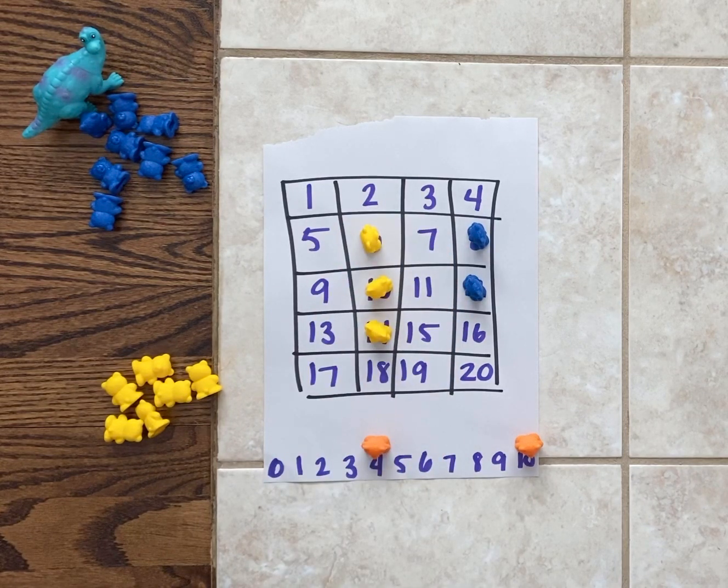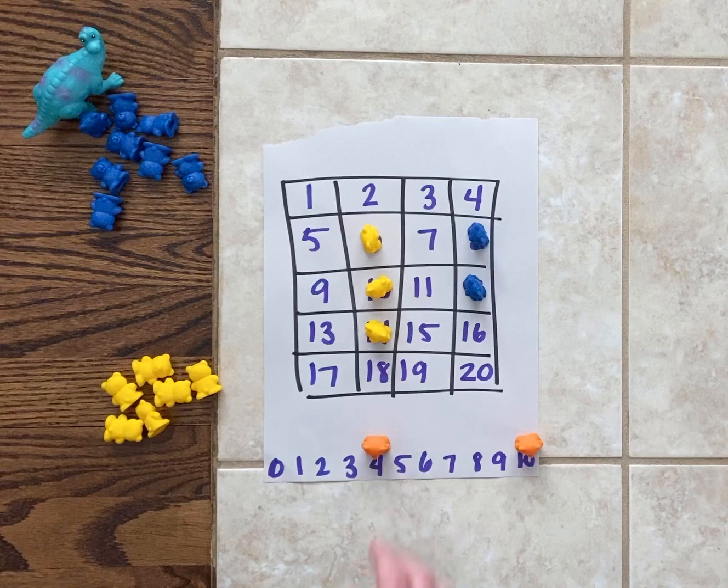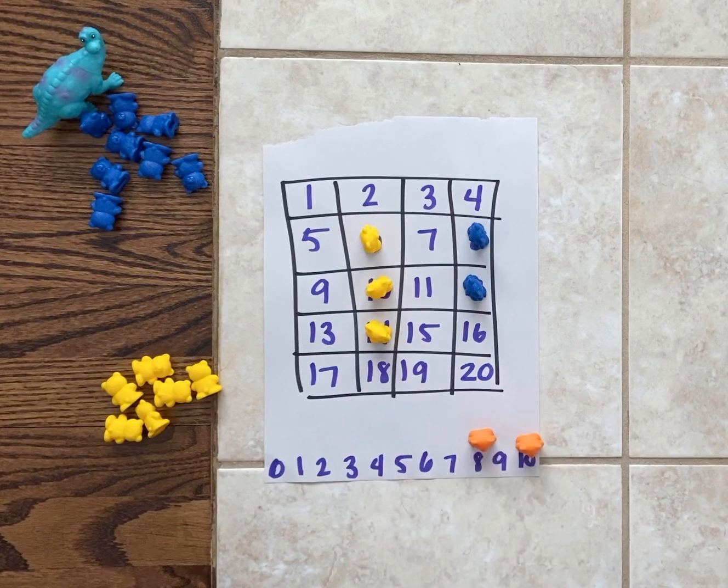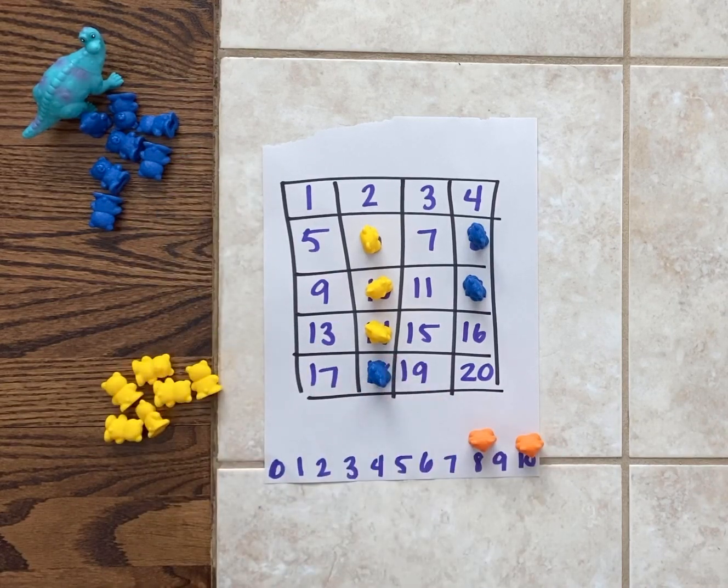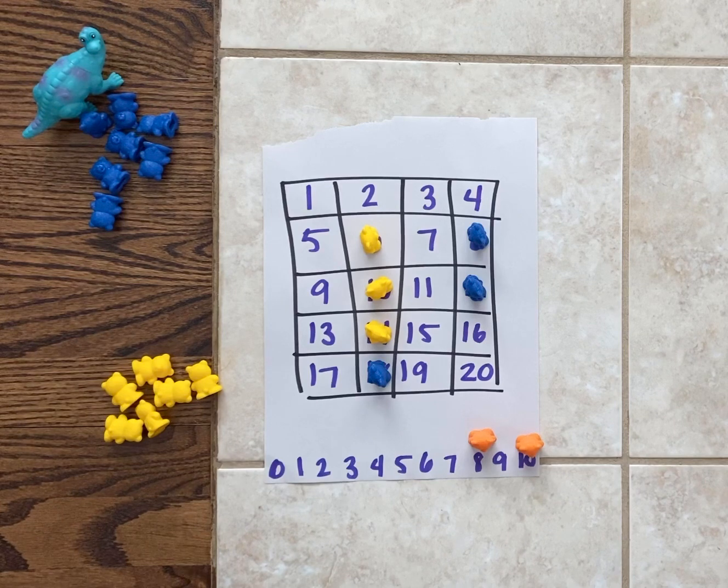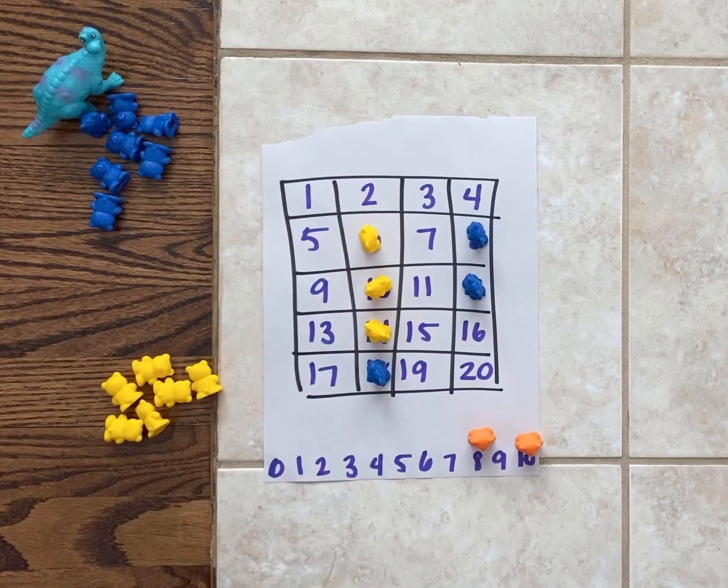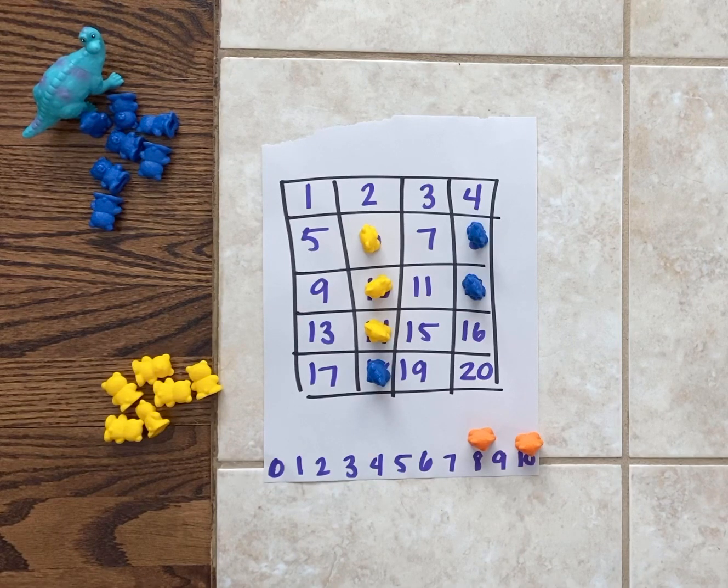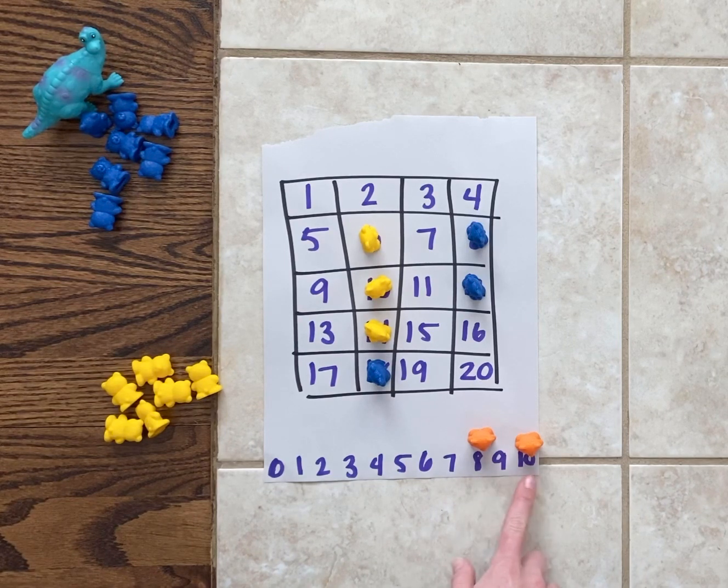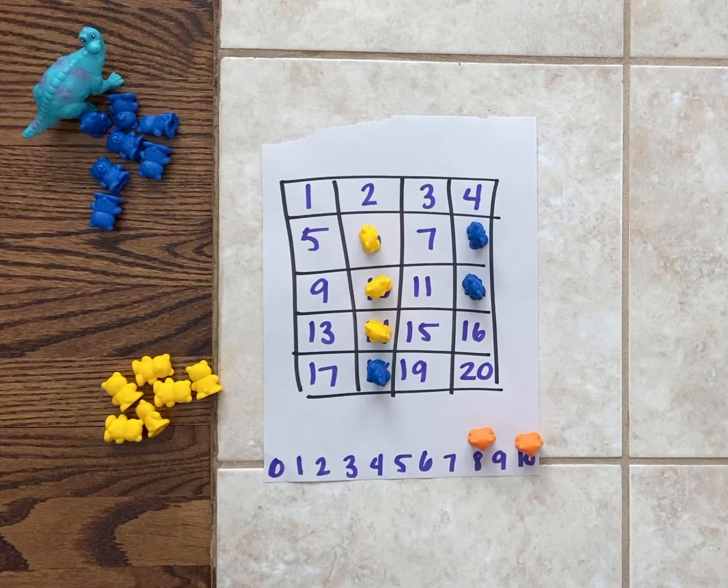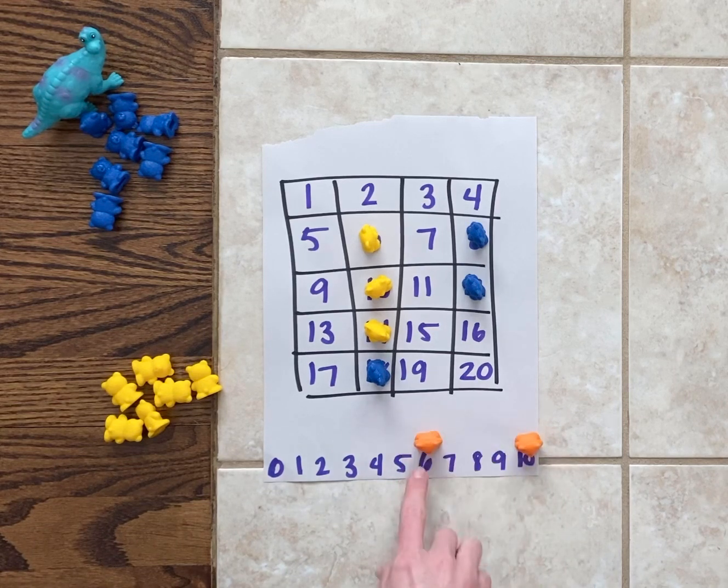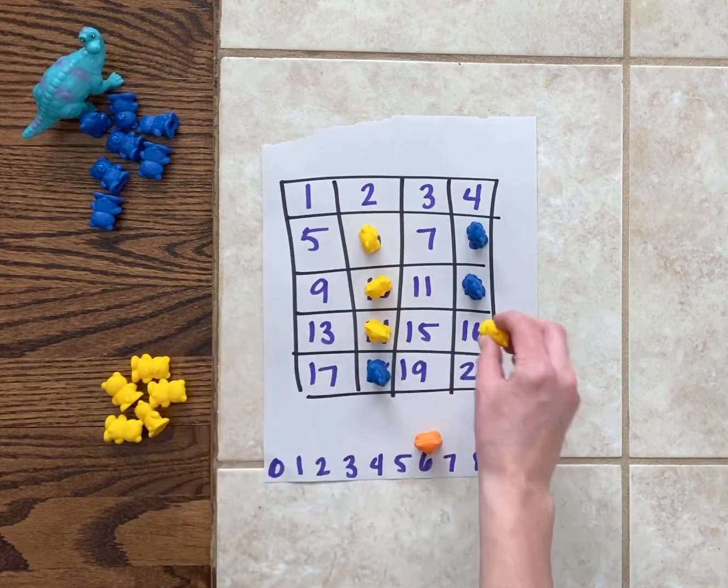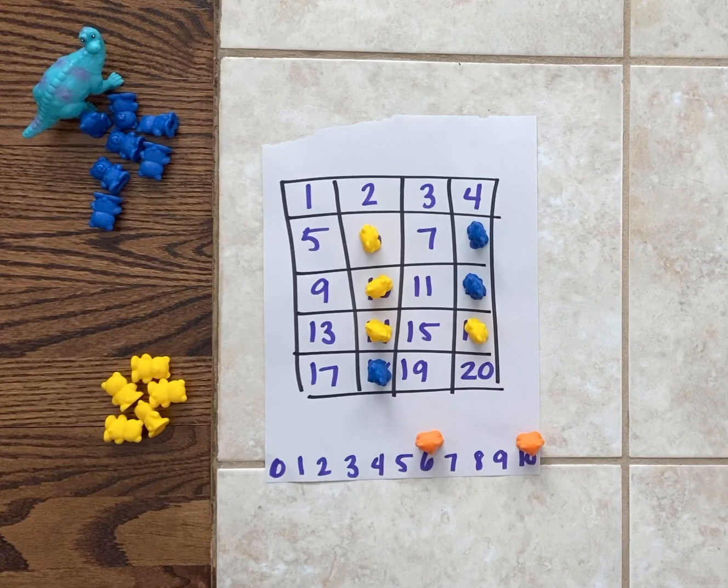So he might take 10 plus 8 is 18 and block my way there. Oh I really want that too but there's no way I can get it with what I currently have, either an 8 or a 10. So I'm going to move this marker over to the 6 to block dinosaur's 16.